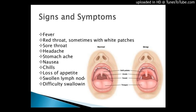Treatment. Group B strep disease is usually treated with penicillin or other common antibiotics — medicine that kills bacteria in the body. Sometimes soft tissue and bone infections may need additional treatment, such as surgery. Treatment will depend on the kind of infection caused by group B strep bacteria. Patients should ask their doctor about specific treatment options.